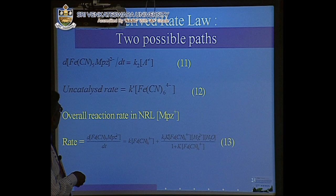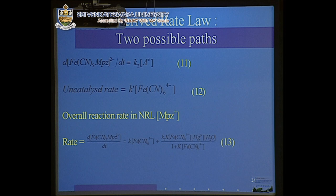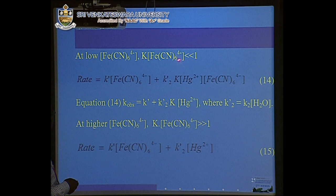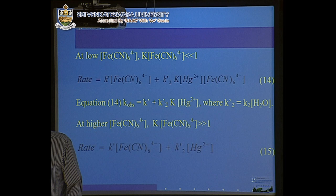Based on these two paths — uncatalyzed and catalyzed — the overall expression includes contributions from both. Through mathematical manipulation, we were able to derive the effective rate expression. When the catalyst concentration is much lower, the rate is directly proportional to its concentration. That is what is needed: the rate should be directly proportional to the concentration of the analyte.